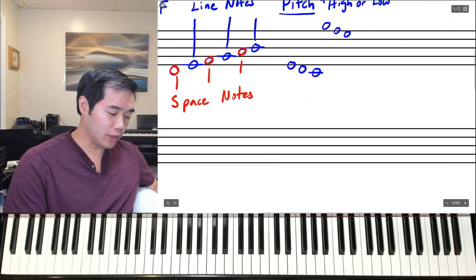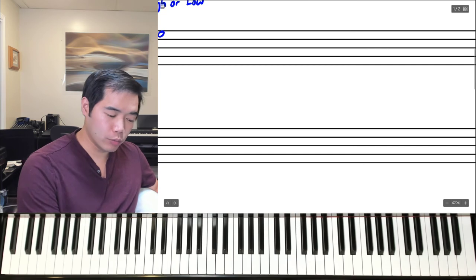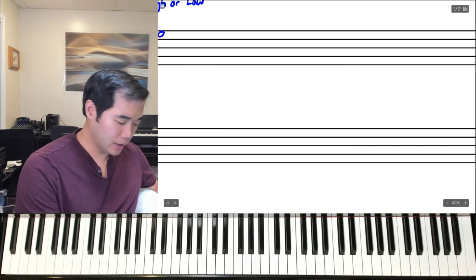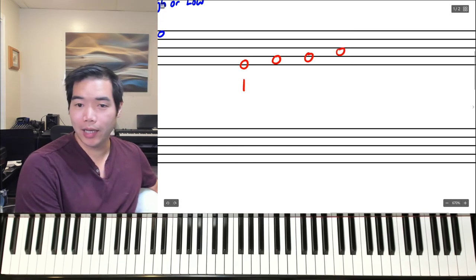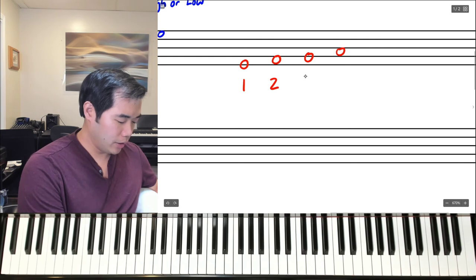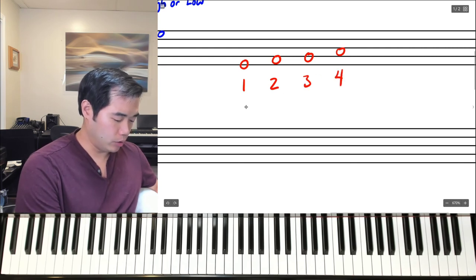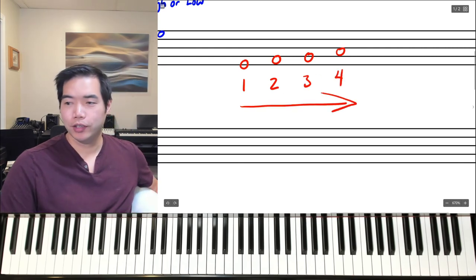Also, when you're reading music on a staff, we always read it left to right, just like you do when you read words. So we would read, sing, or play this note first, then this note, then this note, so we're always reading left to right.